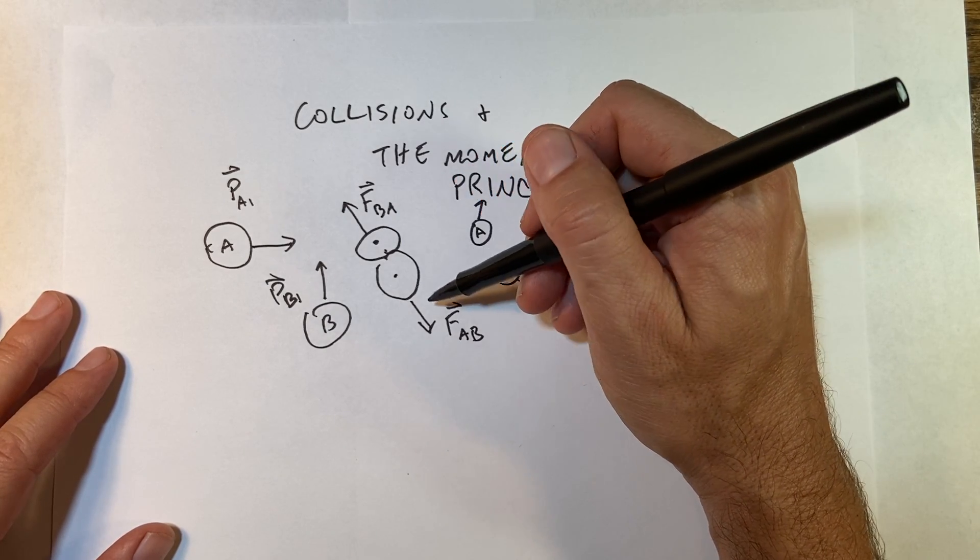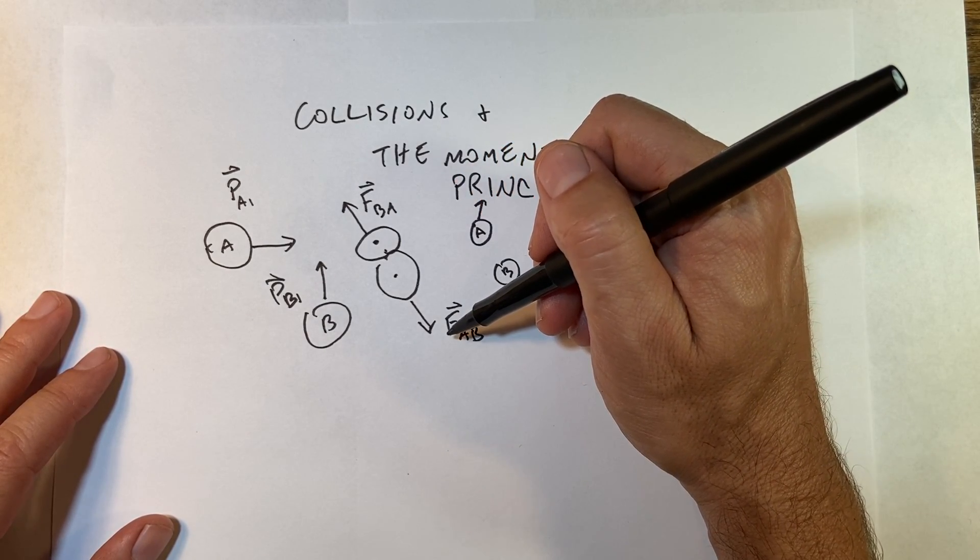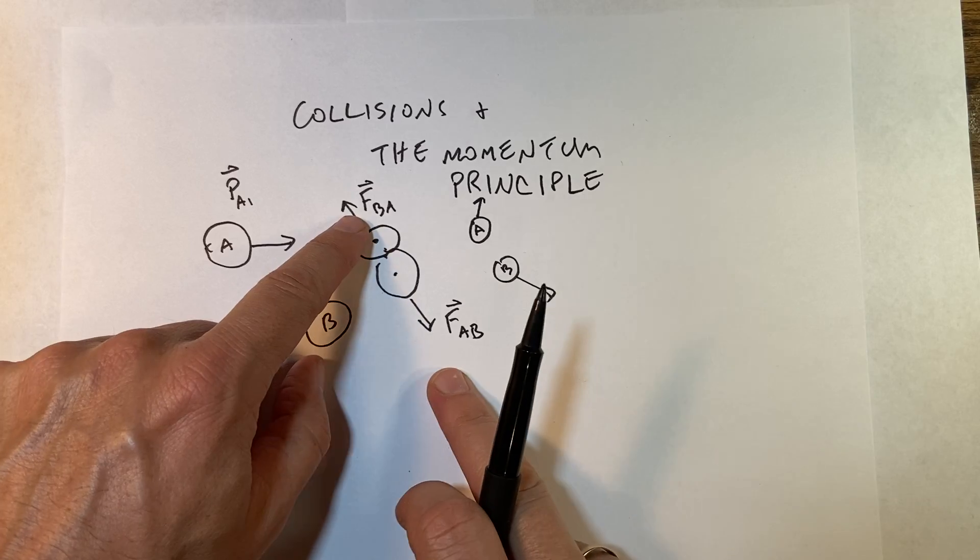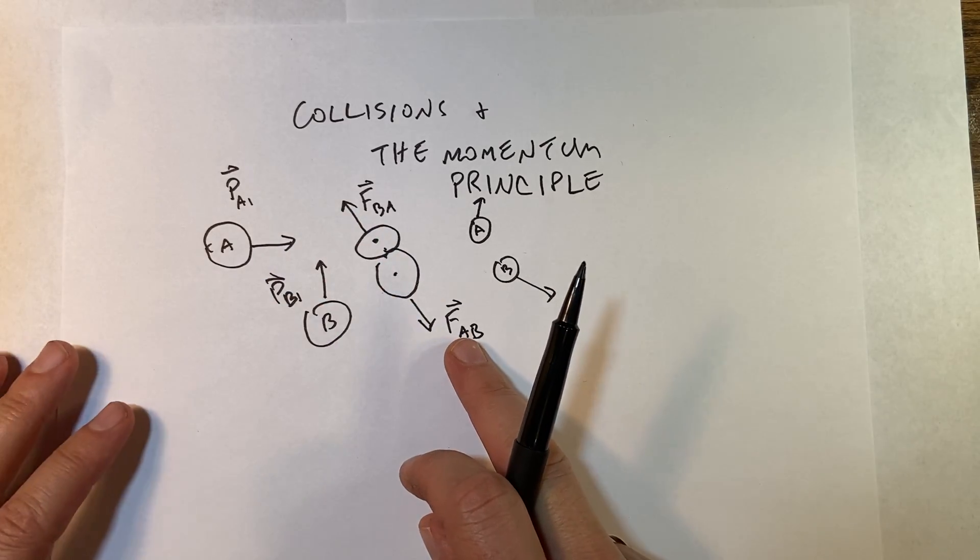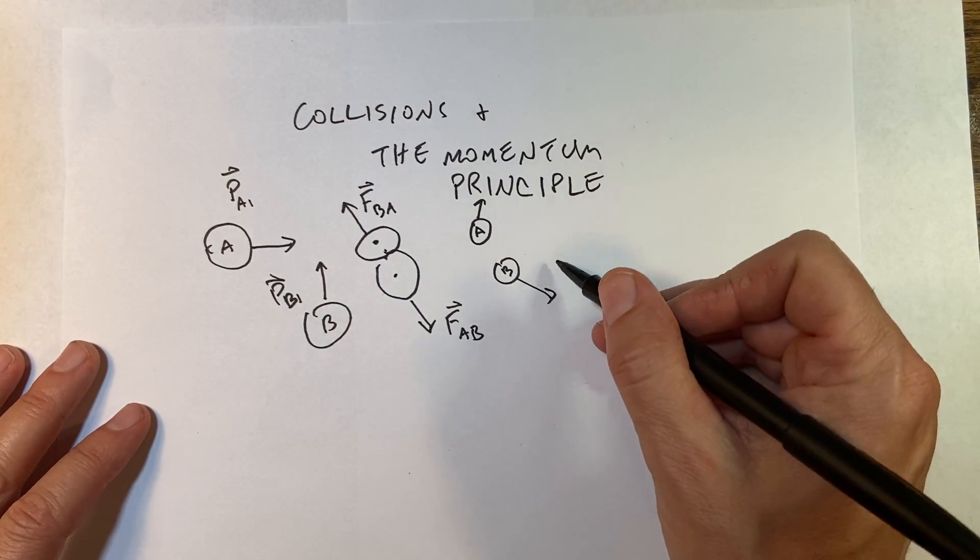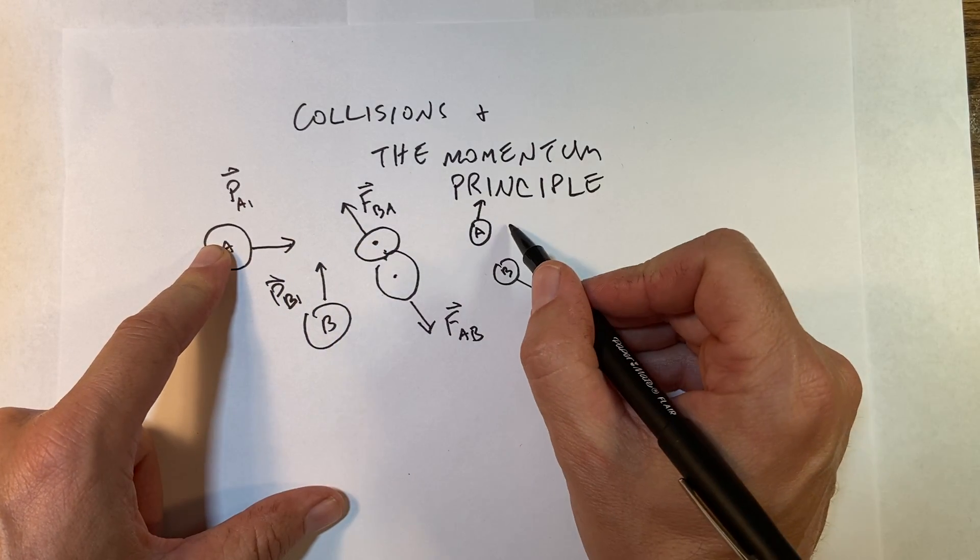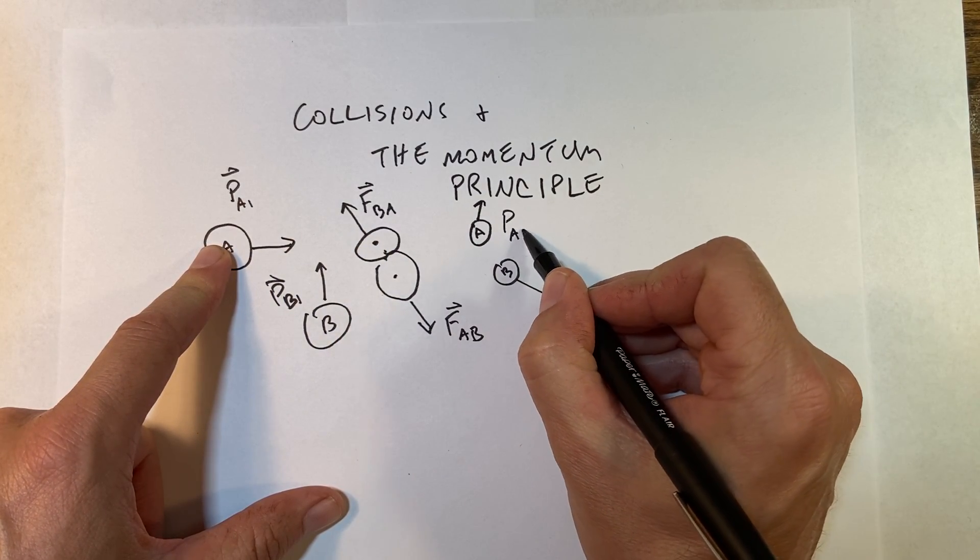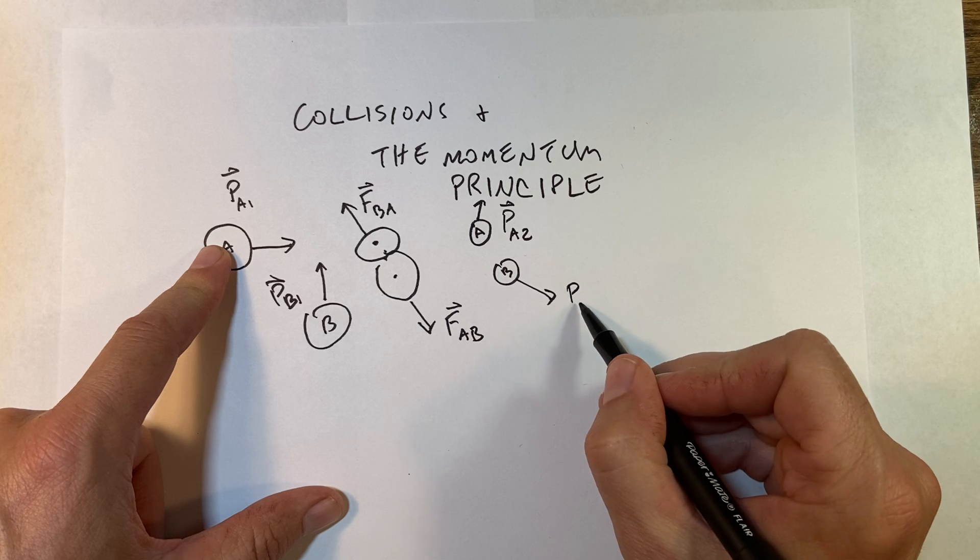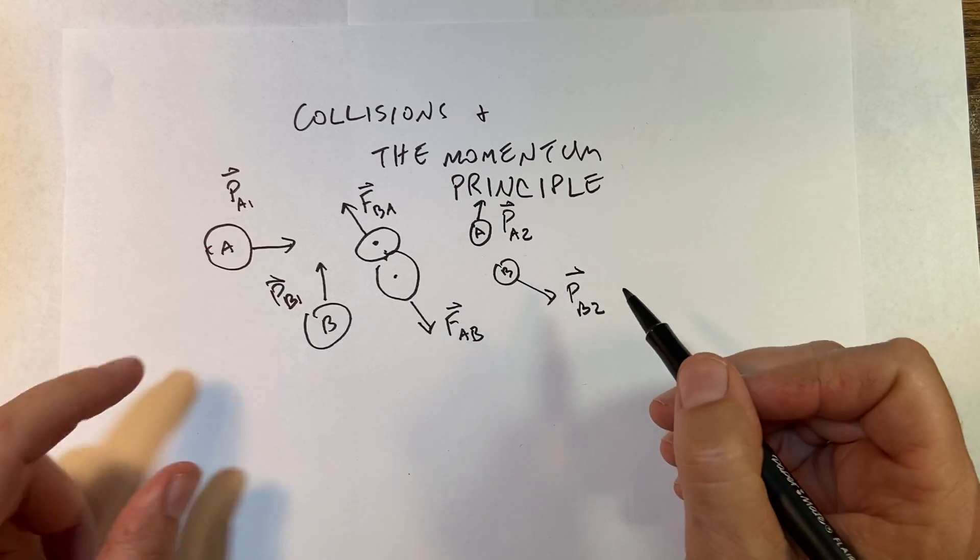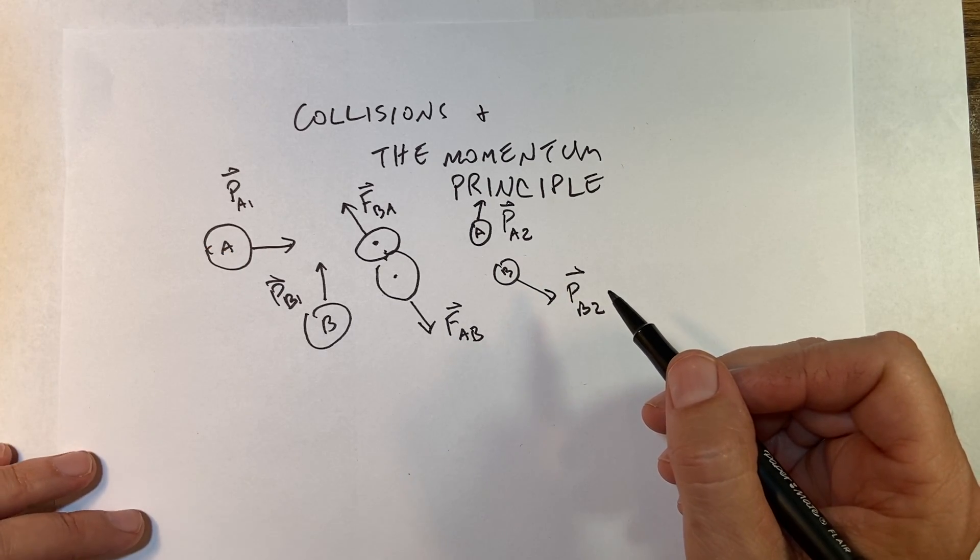So I have these two forces. Then after the collision, the two balls are moving away because this force on A changes its momentum, so now I have p_A2 and I have p_B2. This is not anything new.